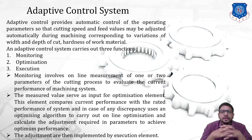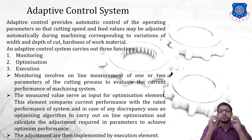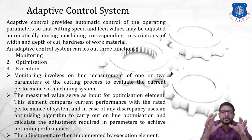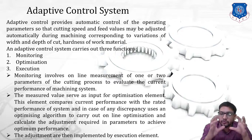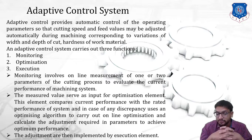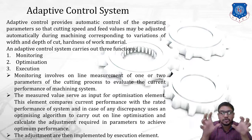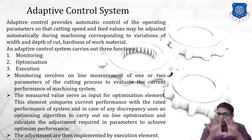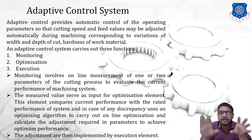Under monitoring, it involves the online measurement of one or two parameters of the cutting process. The parameters of the cutting process — that is, feed, speed, and depth of cut — are monitored and evaluated to determine the current performance of the machining system. These measured values are then input to the optimization element.